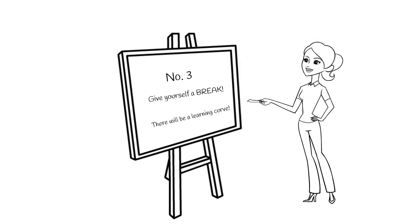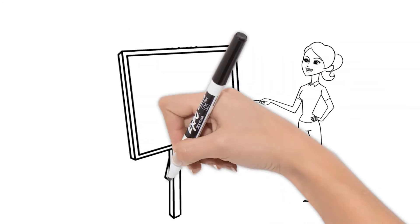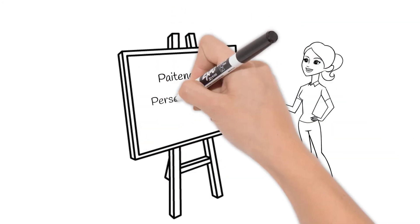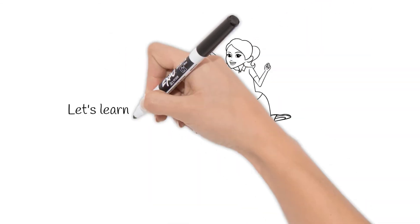Number three: Give yourself a break and know that there will be a learning curve. Don't get disappointed if you don't understand something or many things. When you start learning programming, you're going to need a lot of patience, perseverance, and practice. Now that you know these important tips, let's learn how to program.